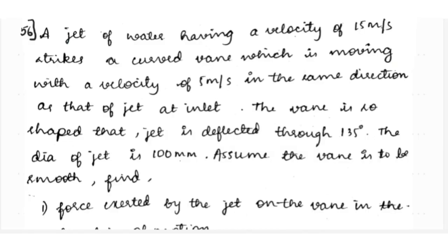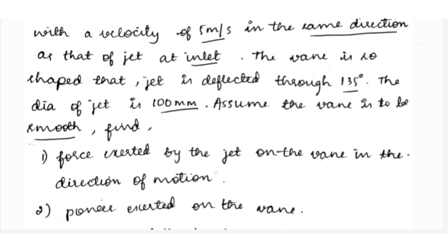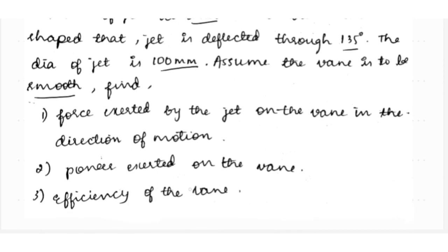Moving to the next numerical on impact of jet on a moving unsymmetrical curved plate. A jet of water having a velocity of 15 meters per second strikes a curved vane which is moving with a velocity of 5 meters per second in the same direction as that of the jet. The vane is so shaped that the jet is deflected through 135 degrees. The diameter of the jet is 100 mm. Assuming the vane is smooth, find the force exerted by the jet on the vane in the direction of motion.